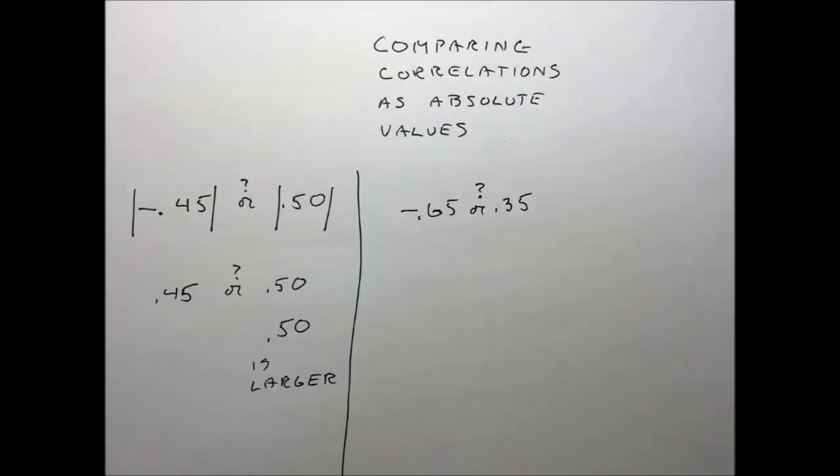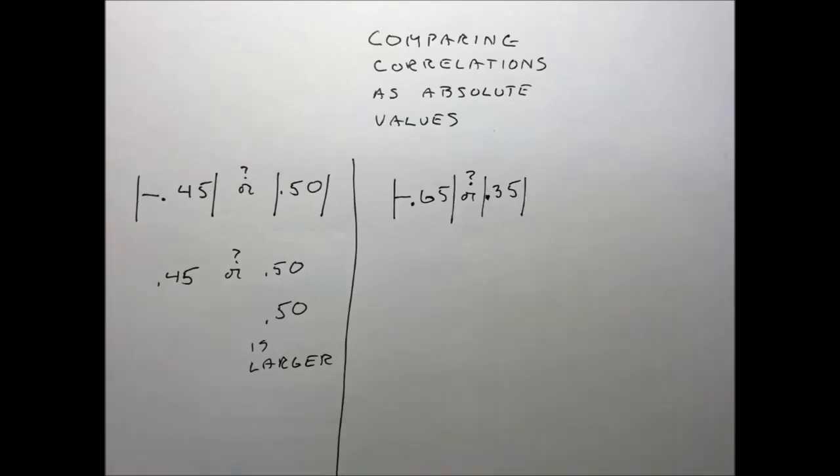Let's try another one now using the same technique. Which of these two is bigger? You're going to take the absolute value of both of them. The vertical lines mean that you're going to take the absolute value of the two and then compare what's left.